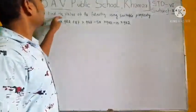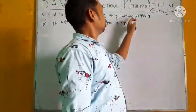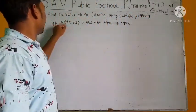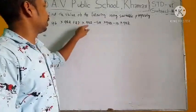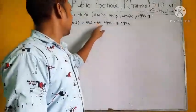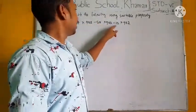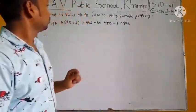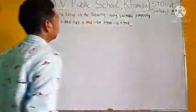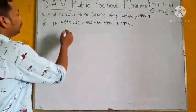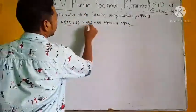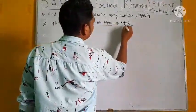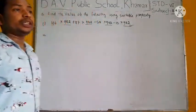Question is find the value of the following using suitable property. Question is 46 into 982 plus 27 into 982 minus 58 into 982 minus 15 into 982. Look at here, everywhere there is 982. Using distributive property.